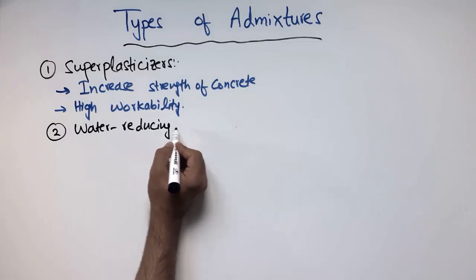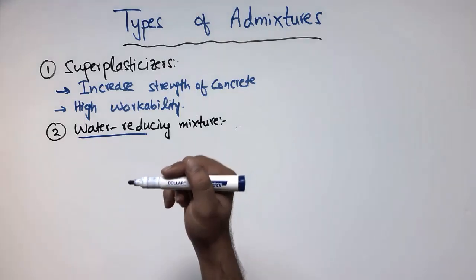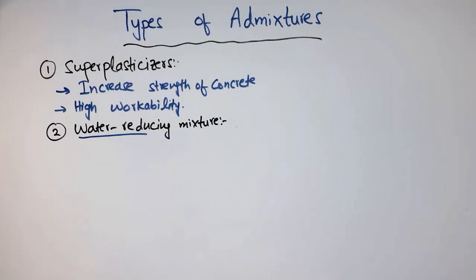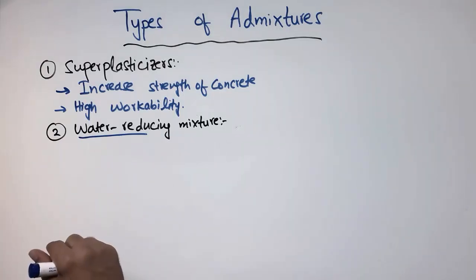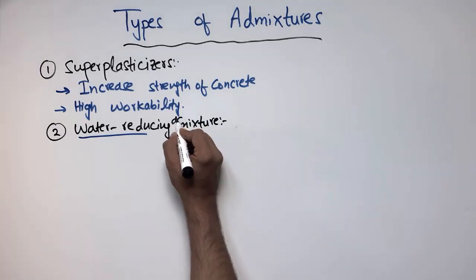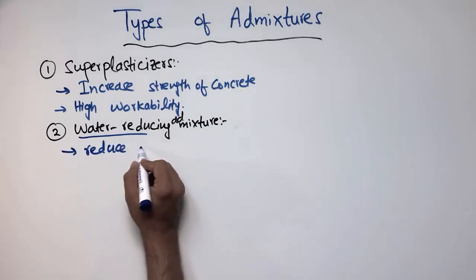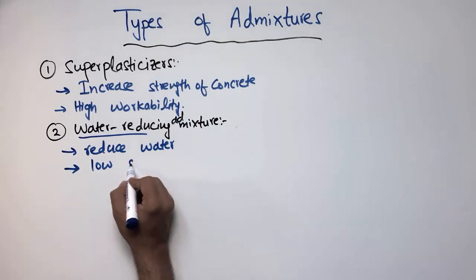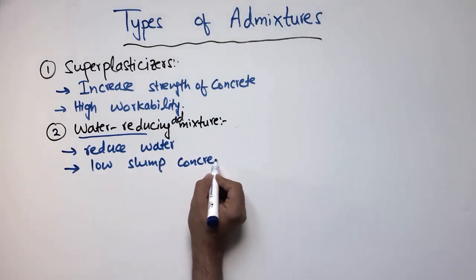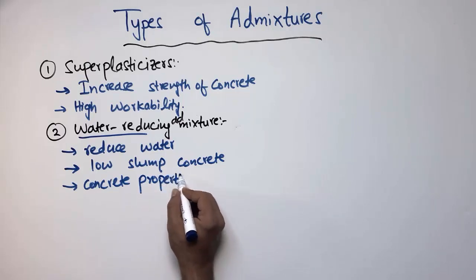Water reducing admixture — this is the type of admixture which is mainly used to reduce the water inside the concrete. It improves the concrete properties. So when we want to reduce the water inside the concrete and achieve high strength properties, we use the water reducing admixture. It produces low slump concrete in this case, but the concrete properties are improved.